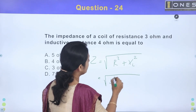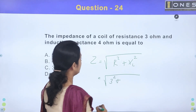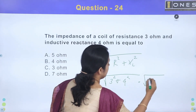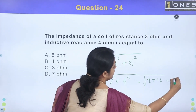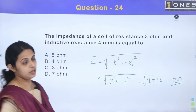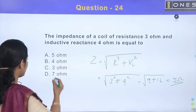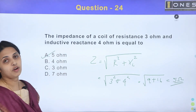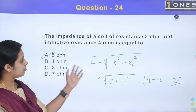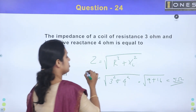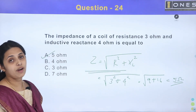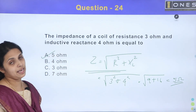The value is √(3² + 4²) = √(9 + 16) = √25 = 5 ohm. So the answer is Option A: 5 ohm. The impedance formula is Z = √(R² + X²).